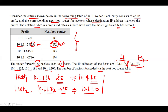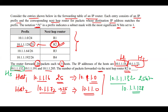Now let's consider host 3, which is 10.1.1.132. If we mask it with a 25-bit net mask, we get 10.1.1.128. So we can say that host 3 can forward the packet via router R2, as the result matches the R2 prefix entry.